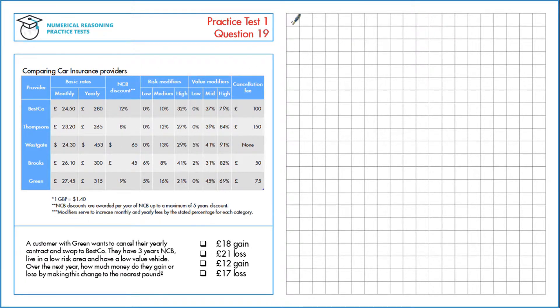So first let's start with Green and their costs. So over a year we're going to be paying £315, we need to use this no claims bonus, we have low risk and we have low value. This is zero so we don't need to include it.